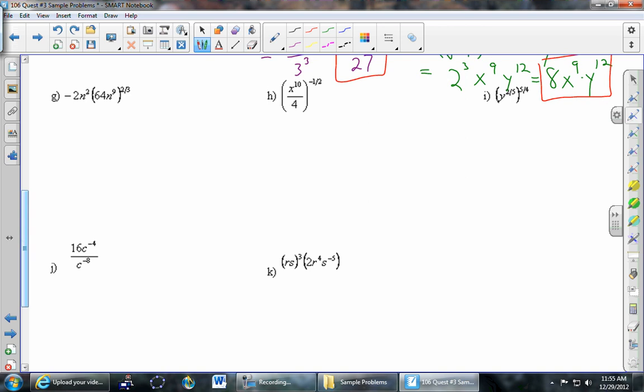Part G: negative 2N squared, 64N to the 9th to the two-thirds. So we're going to have to handle the parentheses first. That two-thirds is going to come in, so everything inside. So it's 64 to the two-thirds times N to the 9th to the two-thirds. Still copying these pieces here, 2N squared. And now we'll deal with the powers.